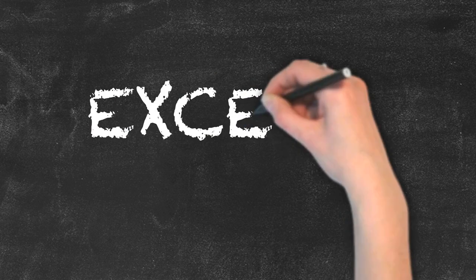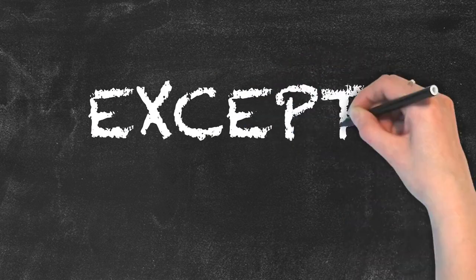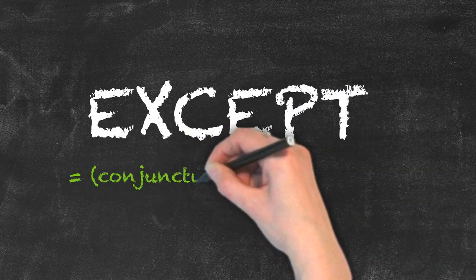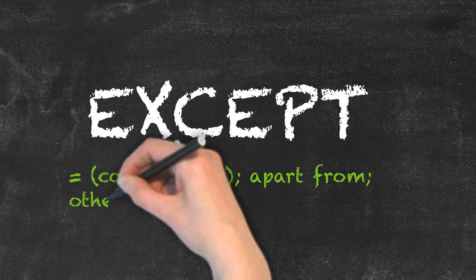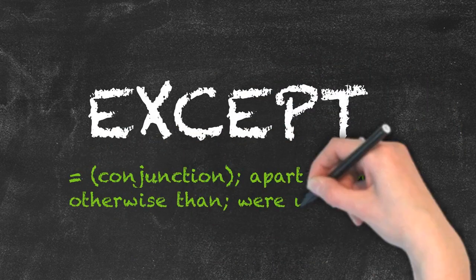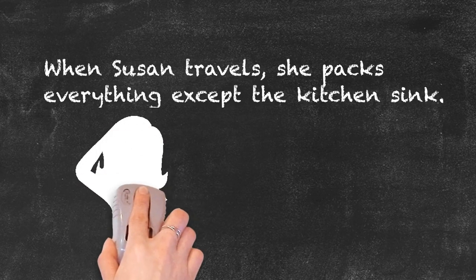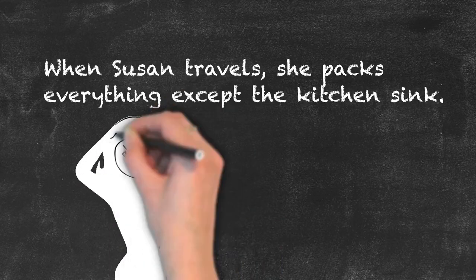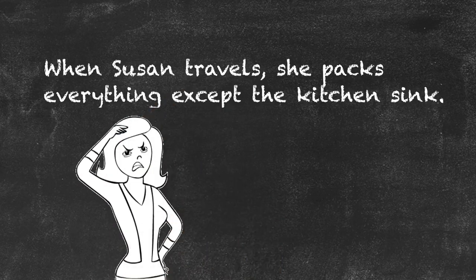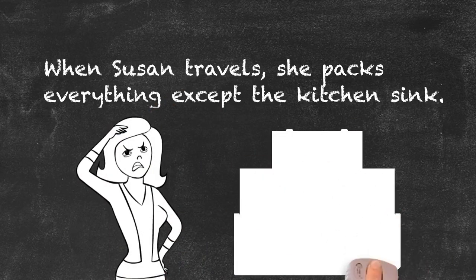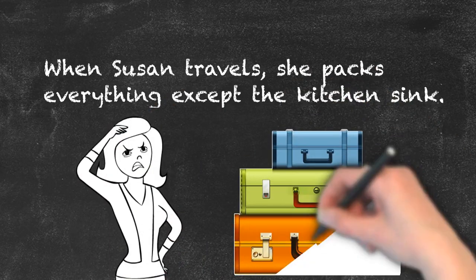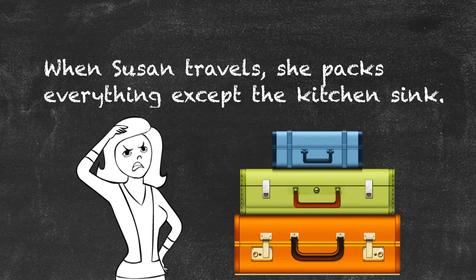Except, on the other hand, is a conjunction and is a synonym for 'apart from,' 'otherwise then,' or 'were it not true.' For example: When Susan travels, she packs everything except the kitchen sink.